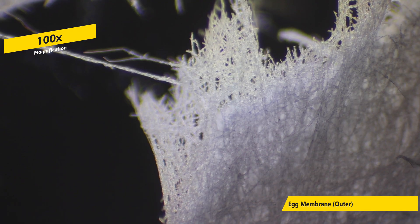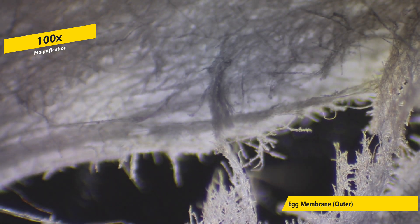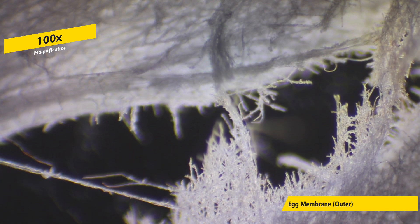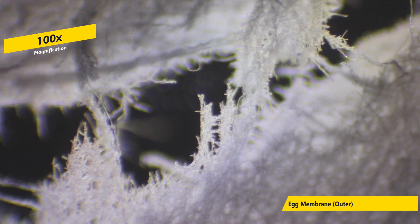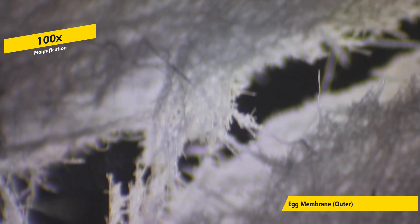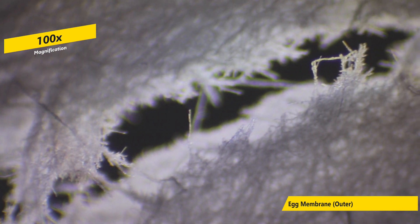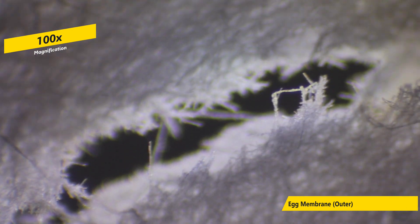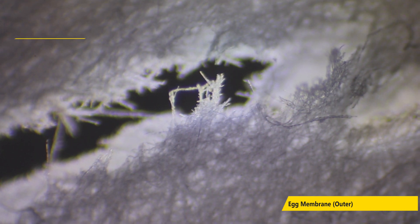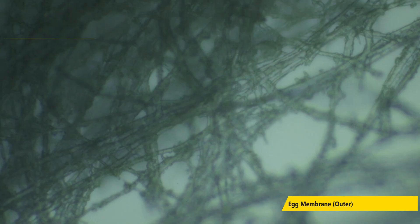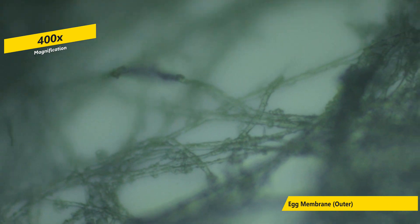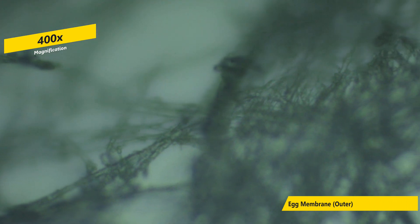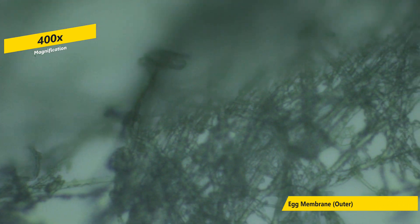It consists of fibrous protein, such as collagen 1, and it can help provide a defense against bacterial invasion, thermal stability, and can even help with mineralization of the outer surface shell while simultaneously preventing the inside egg whites from mineralizing.